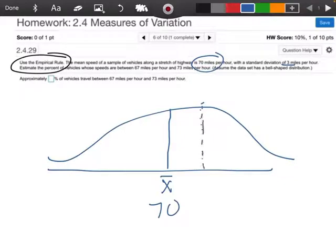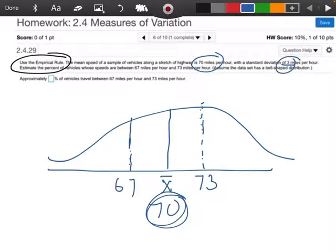What that means is my first one is going to be this number plus that 3. That's going to give me 73. And the one over here is going to be my mean minus my standard deviation. So 70 minus 3 is going to give me 67. And those are the numbers that we have specifically right here.